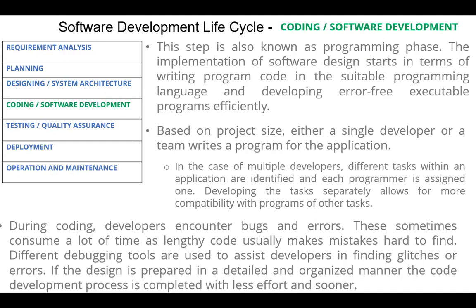Based on project size, either a single developer or a team writes a program for the application. In the case of multiple developers, different tasks within an application are identified and each programmer is assigned one. Developing the task separately allows for more compatibility with the programs of other tasks. During coding, developers encounter bugs and errors, which sometimes consume a lot of time as lengthy code usually makes mistakes hard to find. Different debugging tools are used to assist developers in finding errors.